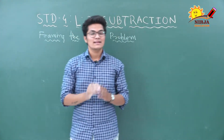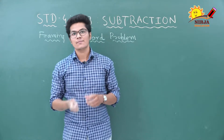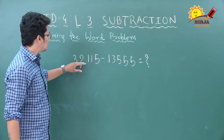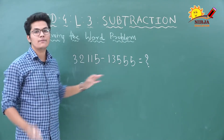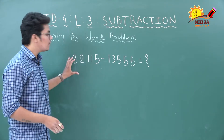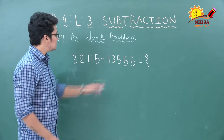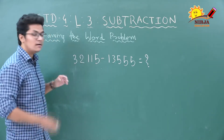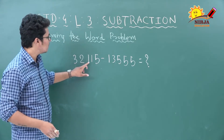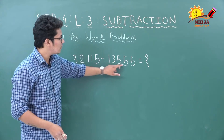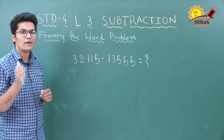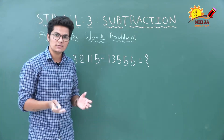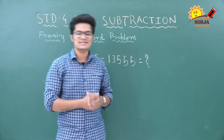Our next topic is framing the word problem. Just like forming word problems on addition, we can form word problems on subtraction using a given number sentence. For example, with the number sentence 32,115 minus 13,555: you could say 'Find the number which is 13,555 less than 32,115,' or 'The cost of a table and chair is 32,115 and the chair costs 13,555 — find the cost of the table.' You can use any context to create a word problem.